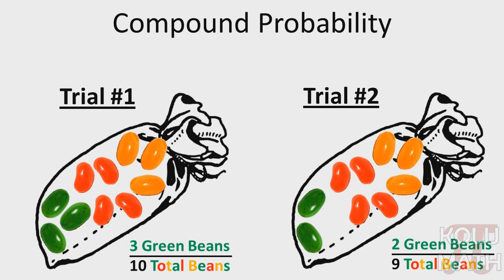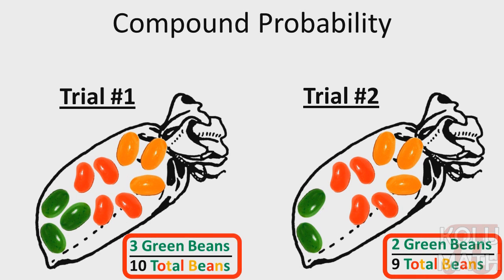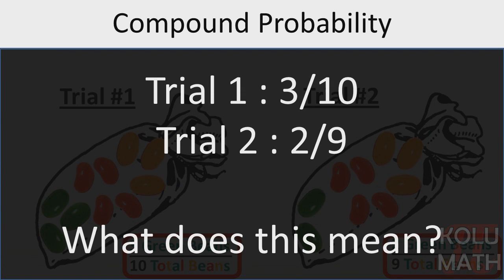So in the first trial, we have three green beans, a 3 out of 10 chance. And on the second trial, one of those beans is already left, so we have a 2 out of 9 chance. So what exactly does that mean? Well, let's take a look at a simpler example and see how it lines up.